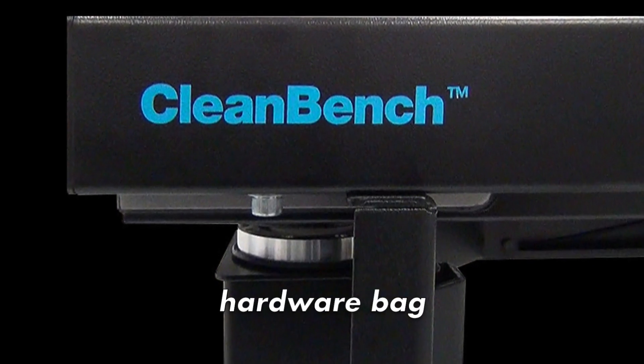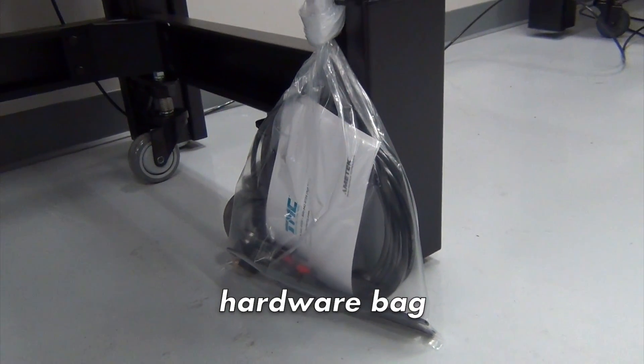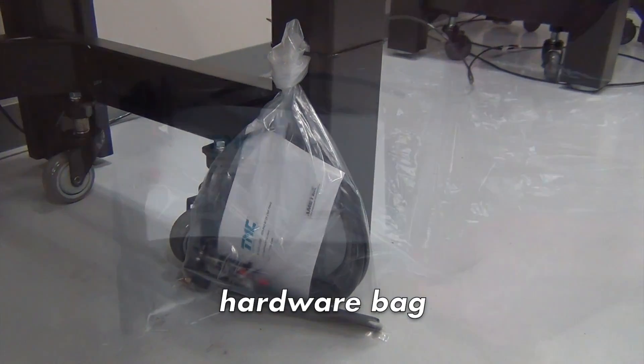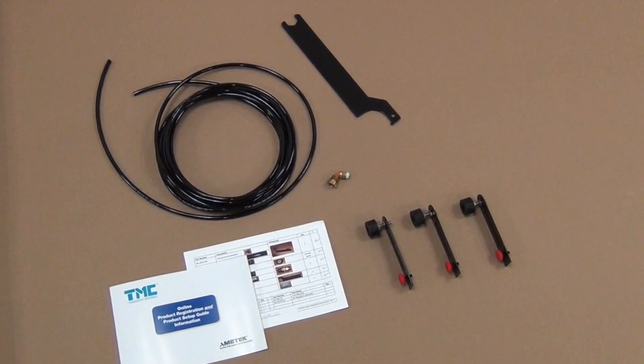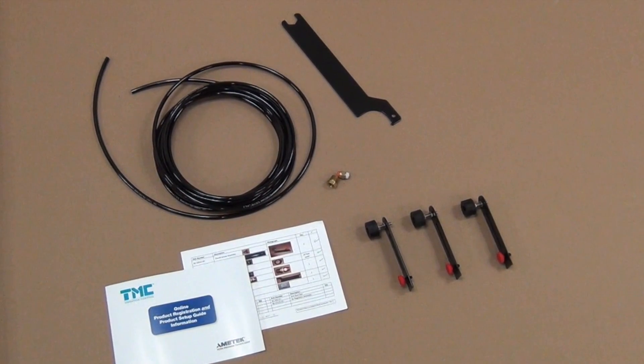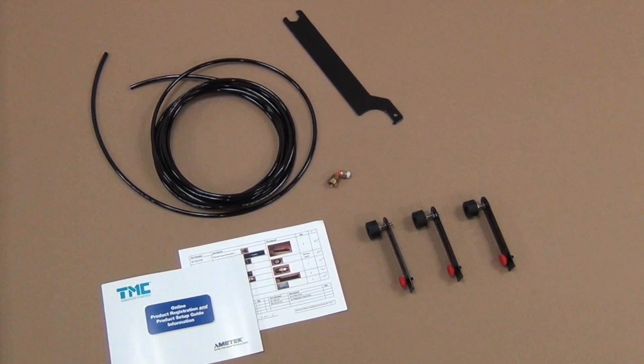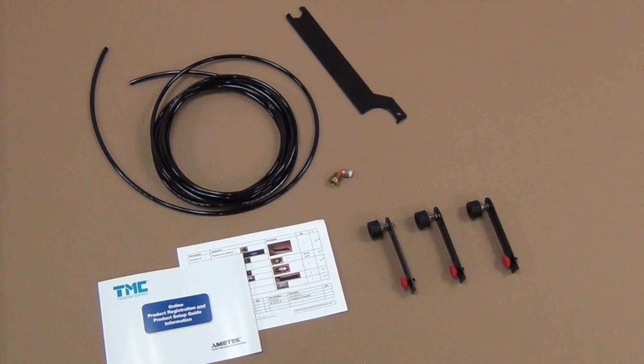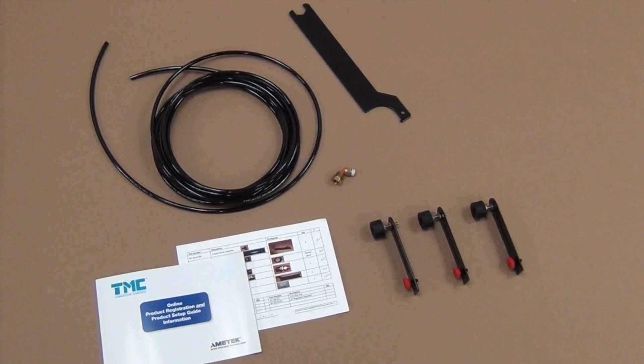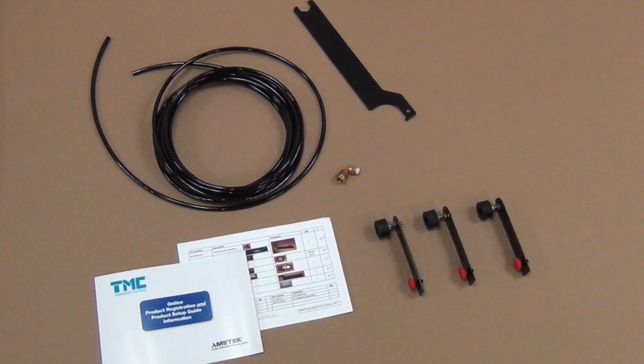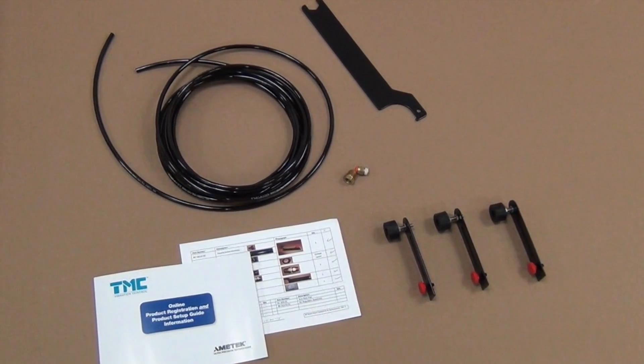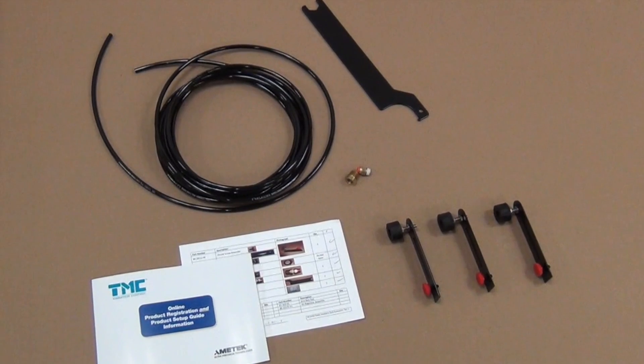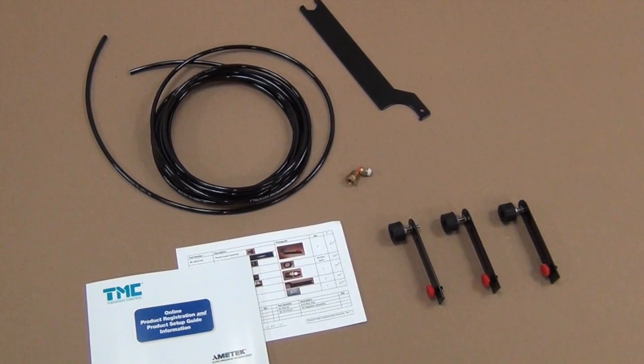In the hardware bag, you'll find online registration instructions, a hardware checklist, 20 feet of quarter inch tubing, a press lock fitting for the end of the tubing, and a reducing bushing which allows for the option of using either one-eighth inch NPT or one-quarter inch NPT male threads. It will be up to the end user's facility to provide 80 PSI of compressed air up to TMC tubing connections.